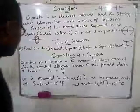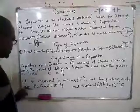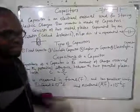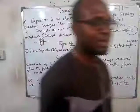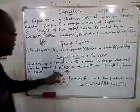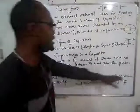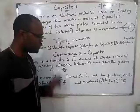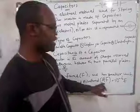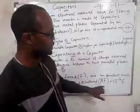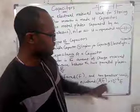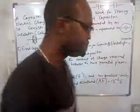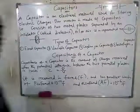Capacitance is measured in farads — that is the SI unit for measuring capacitance. It has smaller units: picofarad, which equals 10 to the power of minus 12 farads, and microfarad, which is the most commonly used smaller unit and equals 10 to the power of minus 6 farads.